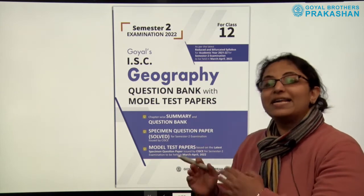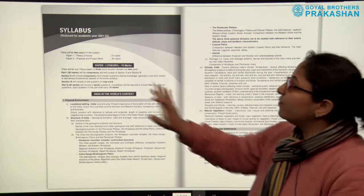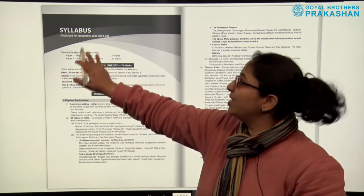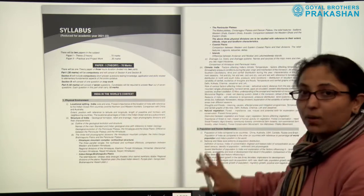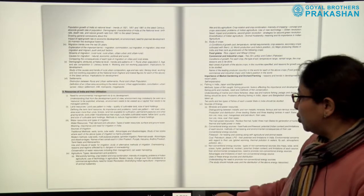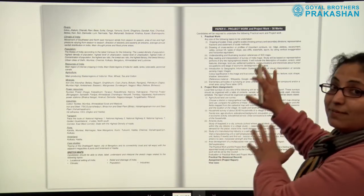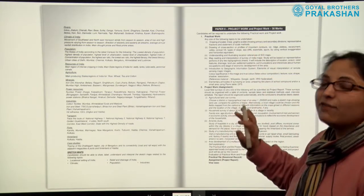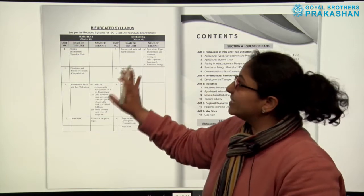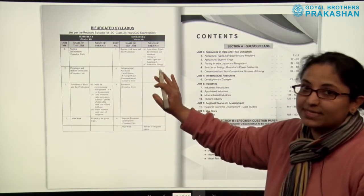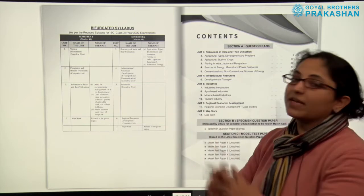Let me take you through the book and tell you how it has been designed. To start with, we have the syllabus at the beginning. This is the reduced syllabus for academic year 21-22. Paper 1, which is theory for 70 marks, is given here, along with the syllabus for Paper 2. Paper 2 syllabus, which is project work, is given here for 30 marks. After that we have the bifurcated syllabus — semester 1 and semester 2, both for 40 marks each.